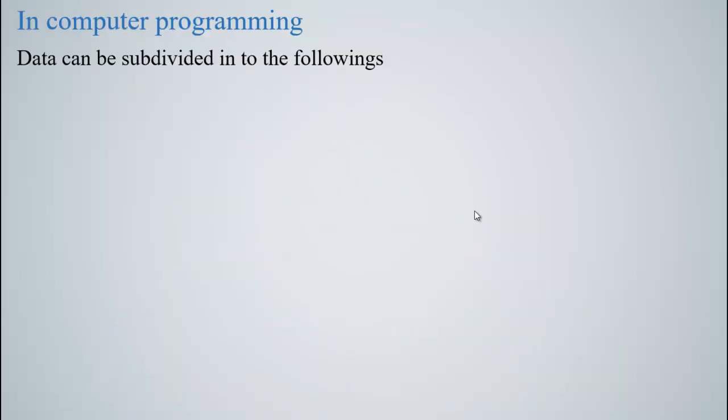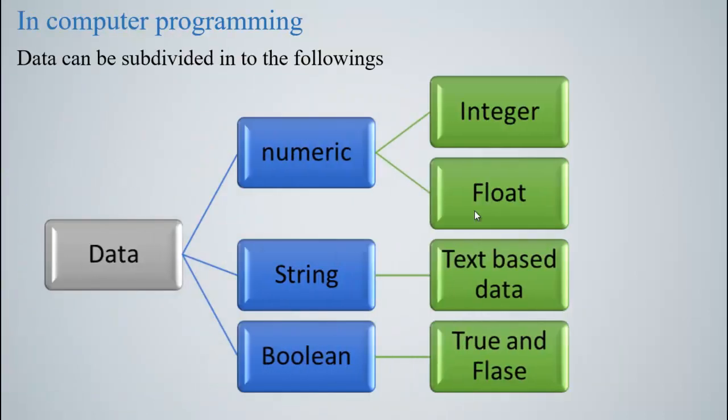In computer programming, data can be subdivided into the followings. Data could be numeric, string or boolean. The numeric type of data could be integer or float. The string type of data could be text. The boolean type of data could be true or false.